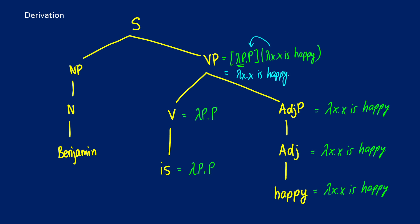For the rest of the tree: Benjamin, let's call him b, which means we send b up the tree. When we apply it to the sentence, this is going to be one if and only if we apply b to lambda x dot x is happy, and we get that it is true if and only if b is happy — that is, true if and only if Benjamin is happy.